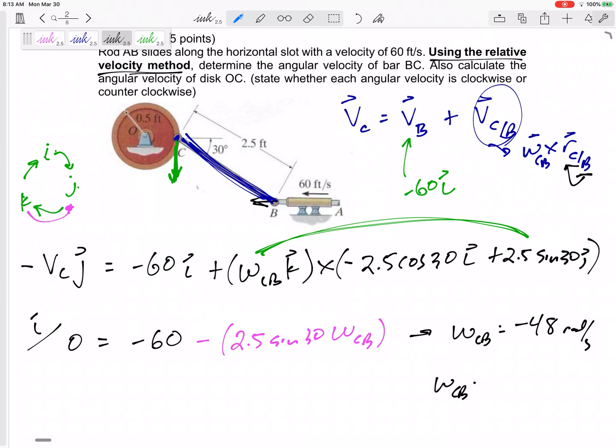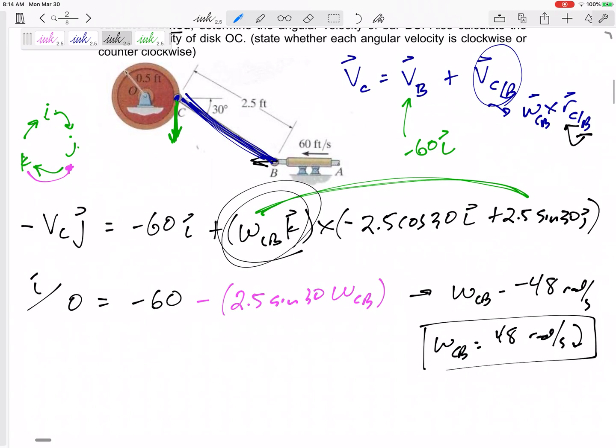What is that negative? Omega CB equals 48 radians per second clockwise. Sorry, that negative means I chose the wrong direction. I chose positive K. And positive K is counterclockwise. So, this is actually clockwise. All right.